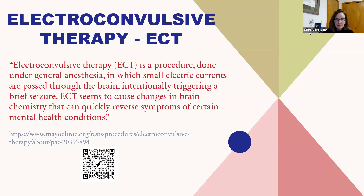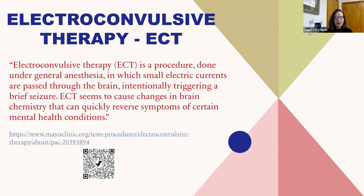Electroconvulsive therapy or ECT has been tried for a long time. In this procedure, the person gets general anesthesia and then a small electric current is passed through the brain and triggers a seizure intentionally. Nobody really knows exactly what happens, but it seems to change the brain chemistry and can reverse some symptoms of certain mental health conditions. It has been used successfully in DSRD.